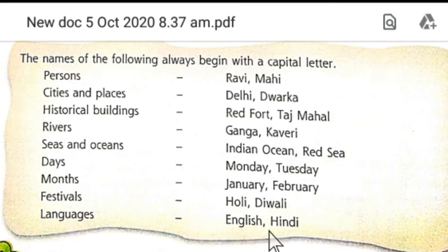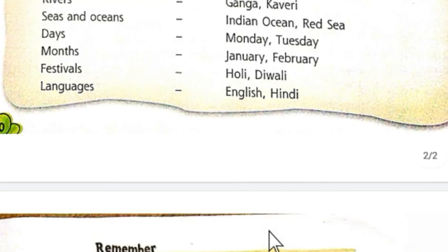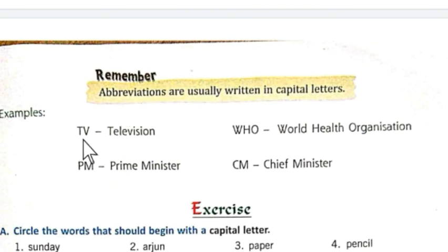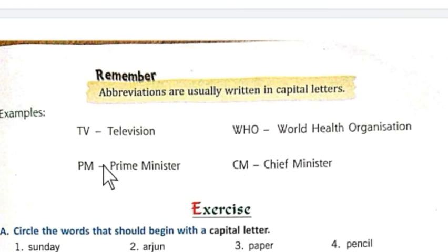Okay, now let me tell you another rule. Abbreviations are usually written in capital letters. You can see here: TV is the abbreviation for Television, PM for Prime Minister, WHO for World Health Organization, and CM for Chief Minister. All abbreviations are written in capital letters.